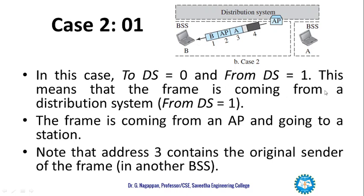In this situation the frame is coming from the access point to the station. Address 3 contains the original sender of the frame, which is station A — meaning A had previously reached the access point somehow, and the frame is now coming from there. Since this is a MAC frame, we consider only the local address.